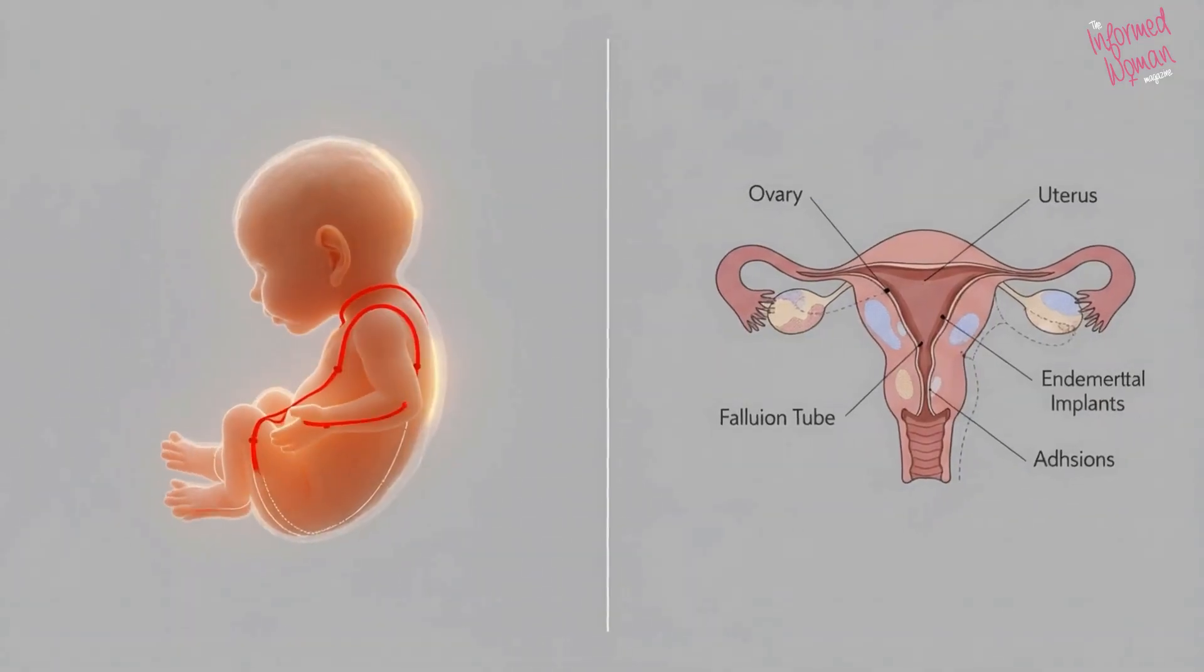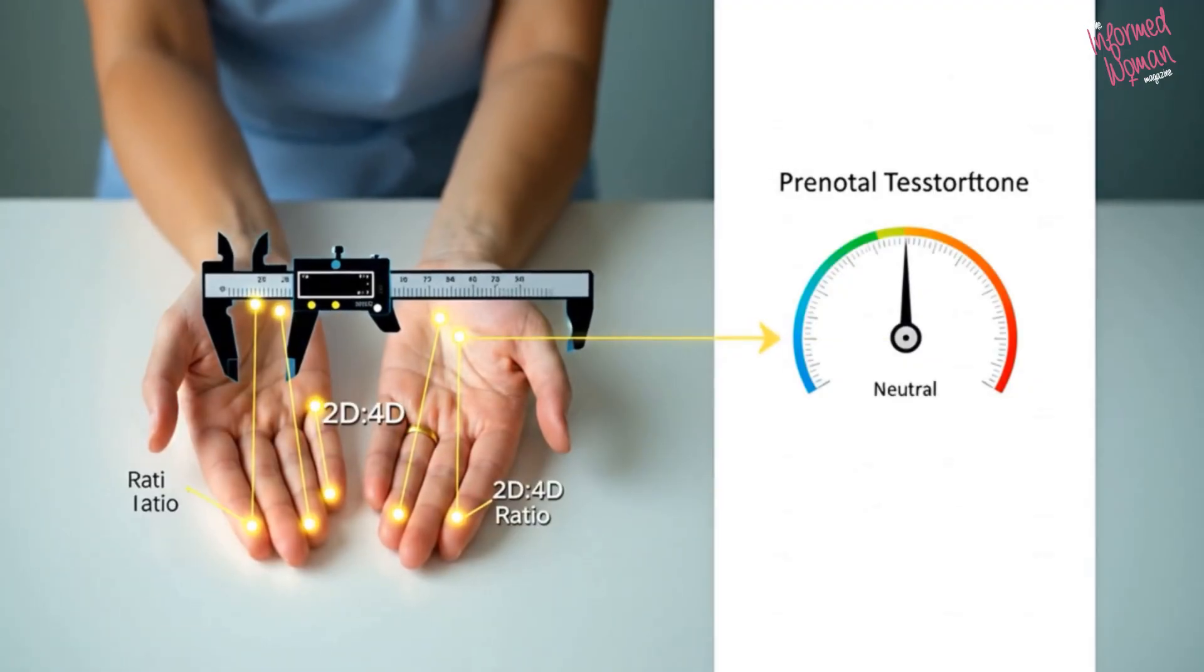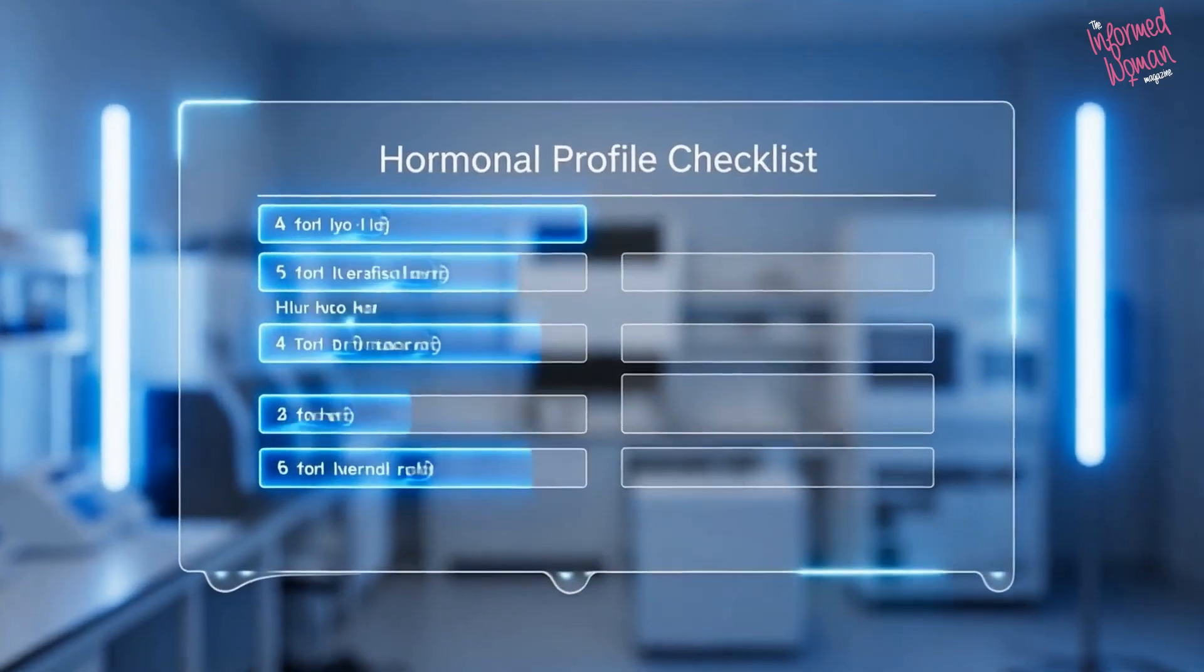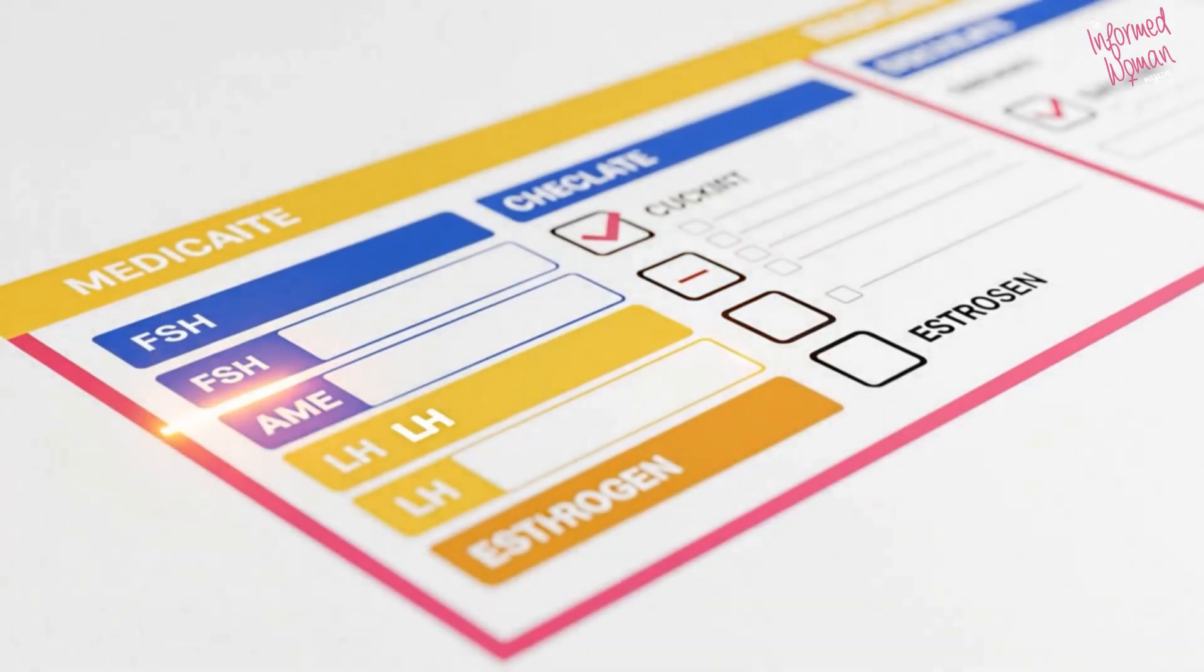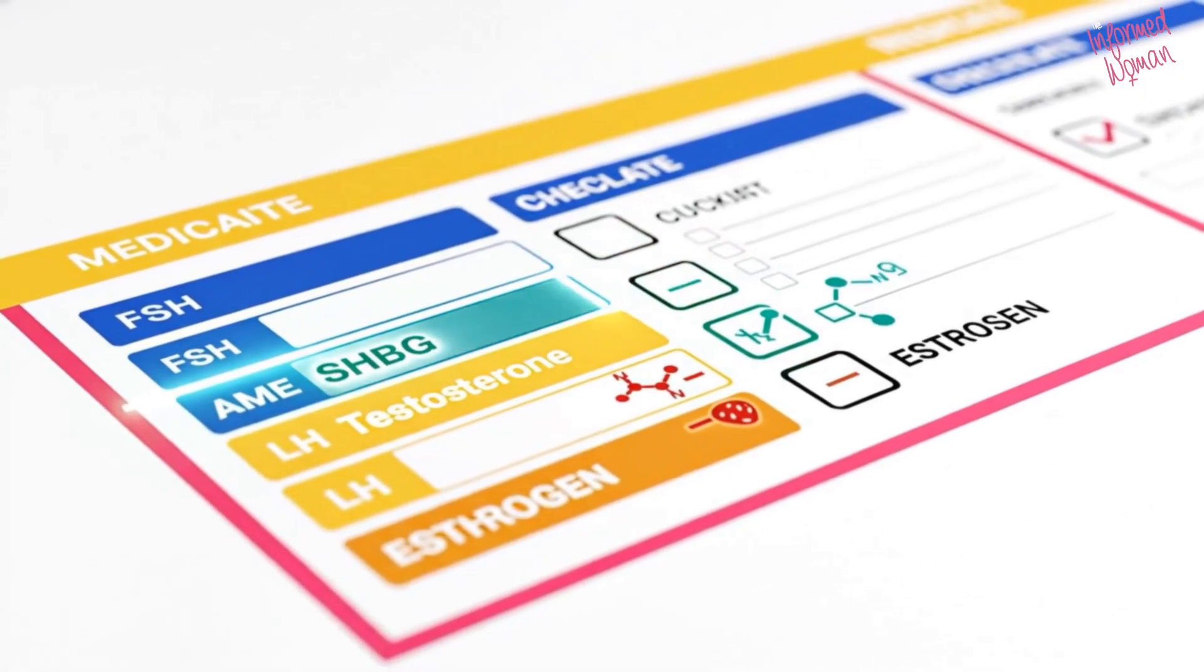In women with endometriosis, shorter AGD and longer 2D4D ratios reflect lower prenatal testosterone exposure. Endometriosis is marked by hormonal patterns: lower LH, lower testosterone, higher SHBG, higher oxytocin, and others.